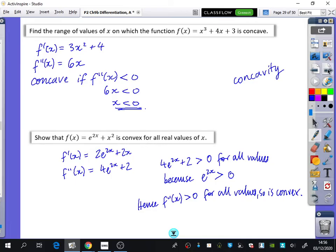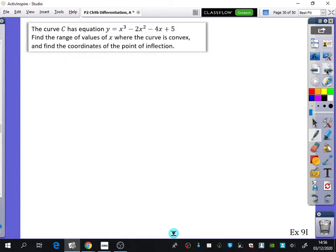So can I go on to the last example before we then do some practice? Says the curve has got equation y = x³ - 2x² - 4x + 5. Find the range of values where the curve is convex and find the coordinates of the point of inflection. Pretty straightforward. So y is x³ - 2x² - 4x + 5. I'm going to just use the y notation. I'm not going to use f notation today just to show you the variety. So I'm going to find the gradient function.